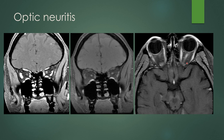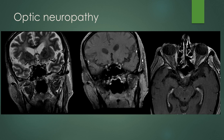Optic neuropathy — in this case there is symmetric enhancement of both optic nerves, almost at the level of the chiasm. This is a patient who underwent radiation treatment for a pituitary tumor and developed vision changes afterwards. This is presumed radiation-induced optic neuropathy, where we get symmetric enhancement of both optic nerves that were in the radiation field.